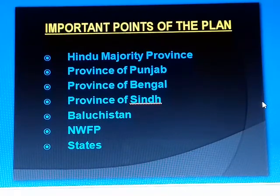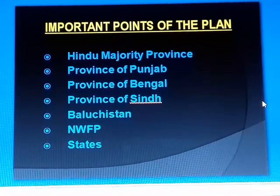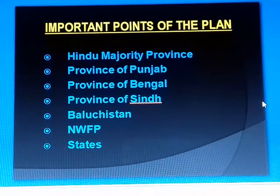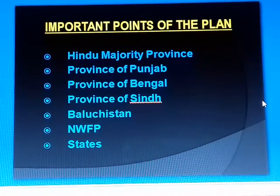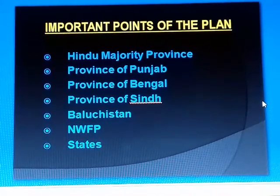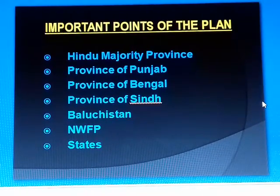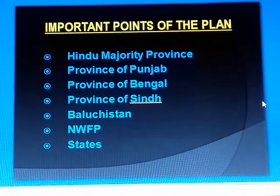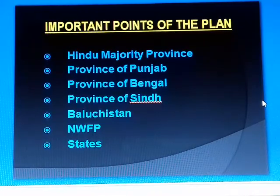The next point is Hindu majority provinces. CP, UP, Orissa, Mumbai, Madras, and Bihar were non-Muslim majority provinces. All these provinces were to be included in Bharat.